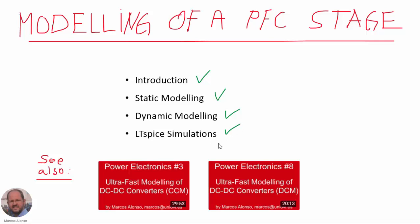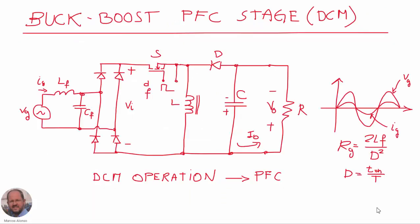This video is a continuation of two previous videos: Power Electronics number three, ultra-fast modeling of DC-DC converters in continuous conduction mode, and Power Electronics number eight, ultra-fast modeling of DC-DC converters in discontinuous conduction mode. We are going to use the buck-boost converter as the power factor correction stage.